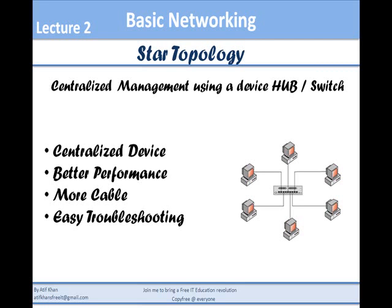Star topology is a type of topology that is managed centrally by using a device called a hub, or its enhanced form, a switch. Every computer has its own cable — computers are not connected directly with each other using a single cable. Instead, they are each connected with an individual cable to a hub or switch. The hub or switch contains different ports — 8-port, 16-port, or 24-port switch — and you can connect the same number of computers as there are ports.